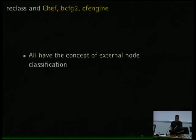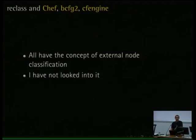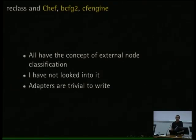Chef, BCFG2, and CFEngine are mentioned at the beginning — all have the concept of external node classification, so they could all use Reclass. It's just a matter of writing the adapters. I have not looked into that, but they are trivial — 20 lines of code. All you have to do is specify how it's supposed to be invoked, how the output should look, and maybe massage it a little bit. All done in Python.